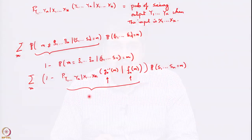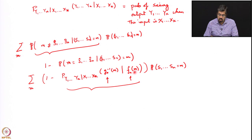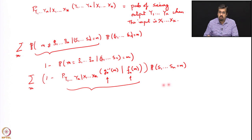As we saw, the communication problem results in this extremely complicated-looking expression that we now need to analyze. This expression depends on the channel noise distribution — the probability of seeing a certain output given a certain input. The expression also incorporates the channel input, which depends on the encoding strategy, and the output, which depends on the decoding strategy. The goal is to find combinations of f_n and g_n so as to minimize this particular error.